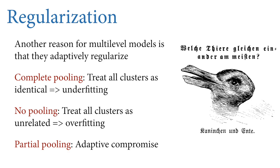Regularization means finding a set of estimates that are neither overfit nor underfit, that make good out-of-sample predictions. From a statistical perspective, there are three kinds of models we might use. The first is the complete pooling perspective, where we treat all clusters in the data — stories, individuals, cafes — as identical. This tends to result in underfitting if there's any interesting variation among them.